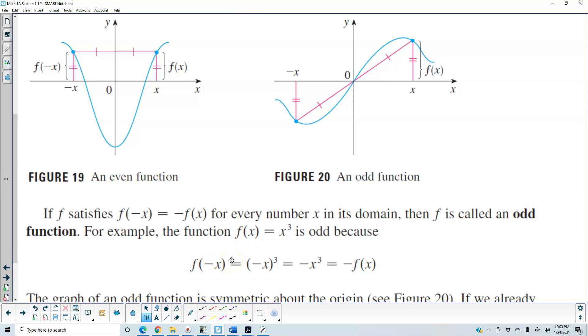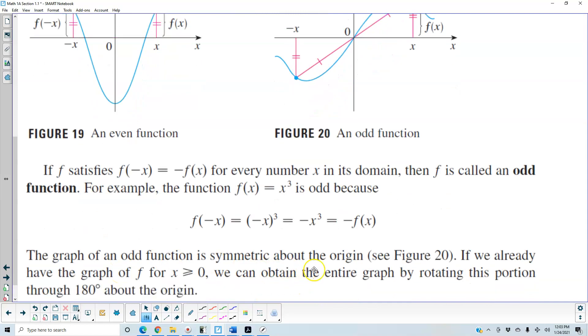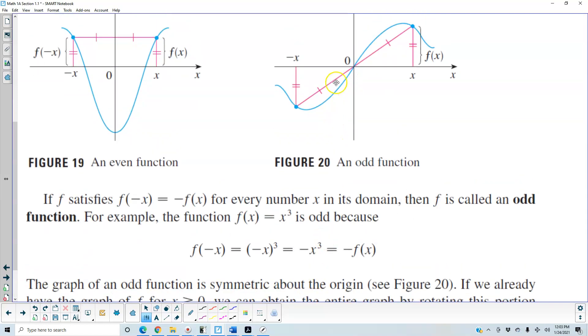The graph of an odd function is symmetric about the origin. This means that if you rotate the entire graph about the origin, you have an odd function.